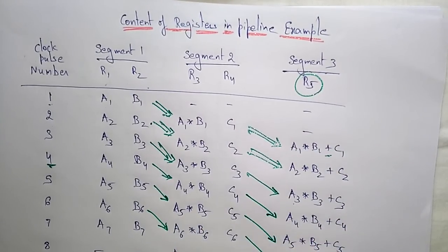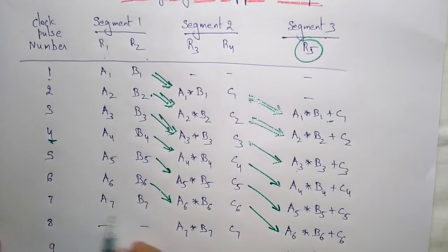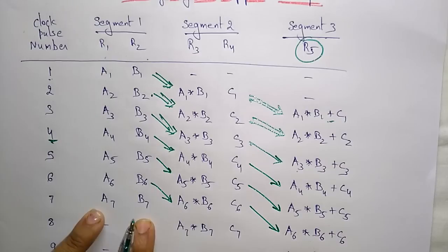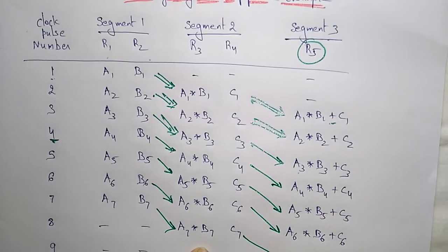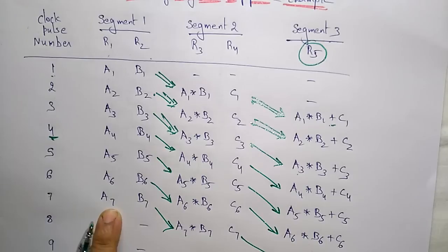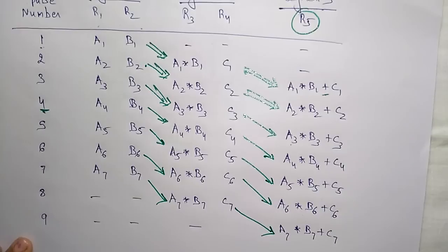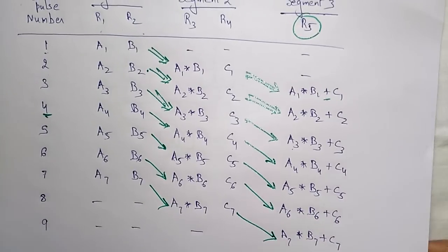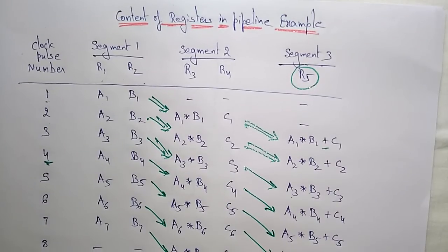So in each cycle: one phase is fetching, in another cycle it is decoding, and in another cycle it is executing. This is an example of the pipelining process. Thank you.